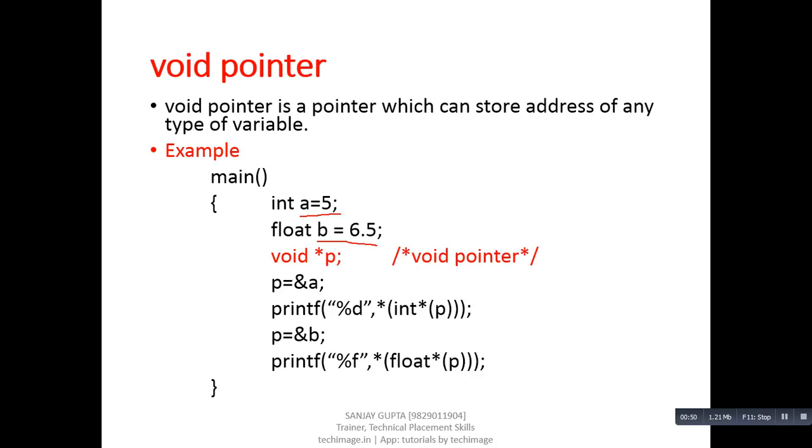Then we have declared a pointer p which is of void type. First, we are trying to assign the address of a into p, so p can successfully receive the base address of variable a.